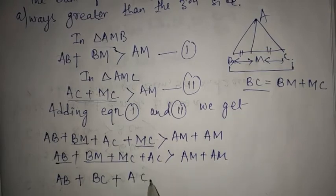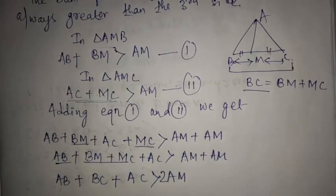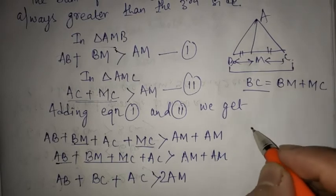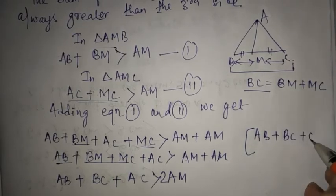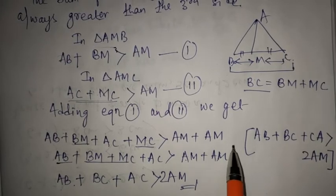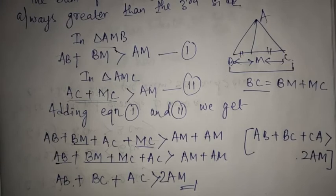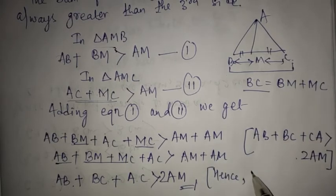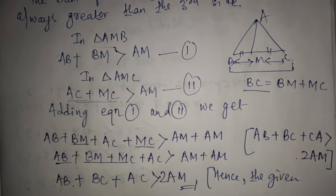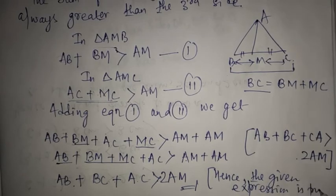So BC plus AC is greater than 2AM. Did you see what we needed to prove? We needed to justify that AB plus BC plus CA is greater than 2AM. AB is here, BC is here, and CA or AC is here — so we have: AB plus BC plus CA is greater than 2AM. Hence the given expression is true.